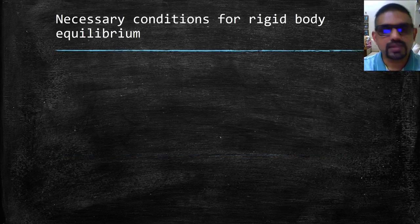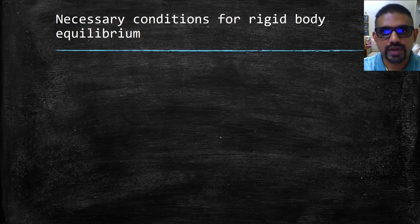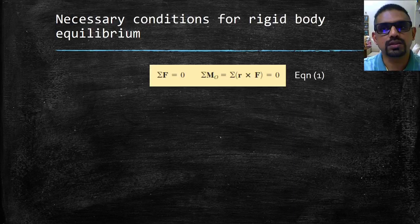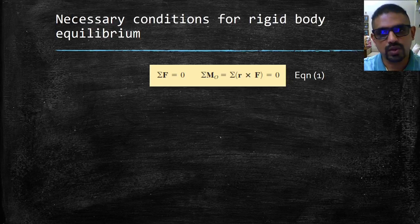The necessary and sufficient condition for equilibrium of a rigid body can be obtained by setting R and M equal to zero in the relation, that is: sigma F is equal to zero, and moment about any point is equal to zero.